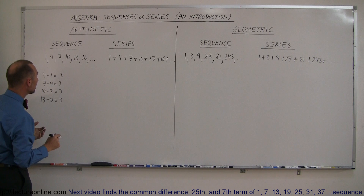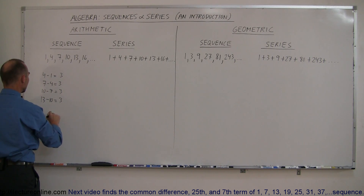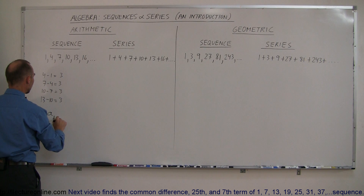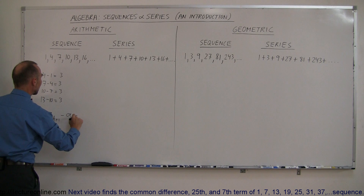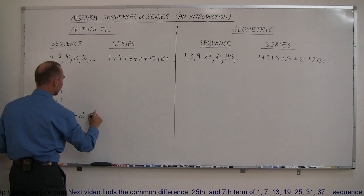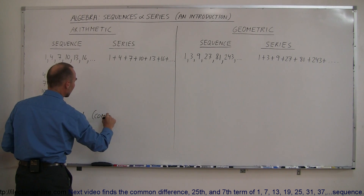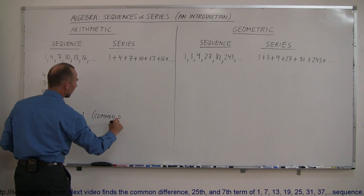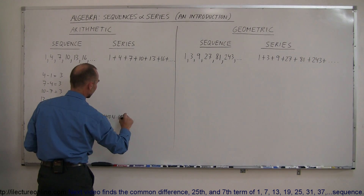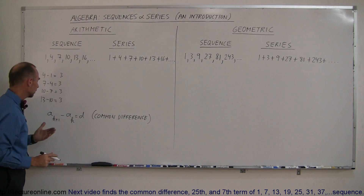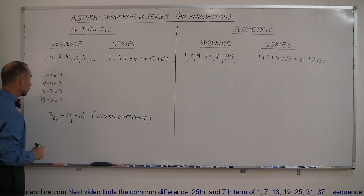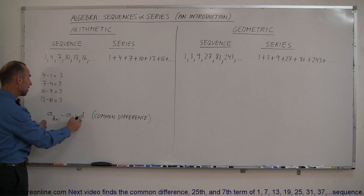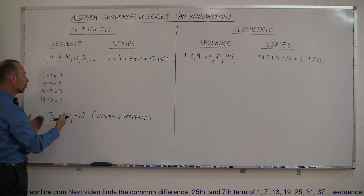You can see the pattern. We can take any element of the sequence, a sub (k+1), and subtract the previous number a sub k, and we get what is called the common difference. This is how we generally write the difference between any two consecutive numbers in an arithmetic sequence or series — we always get the very same number, which in this case is 3.